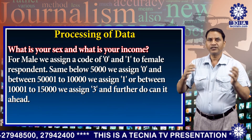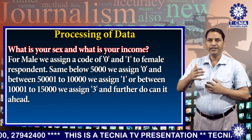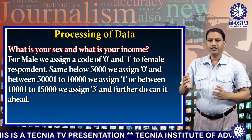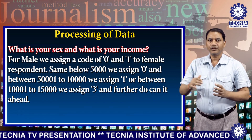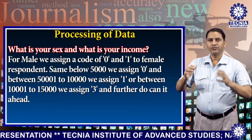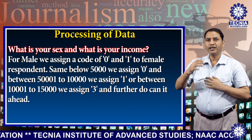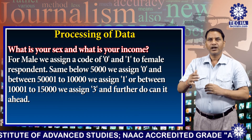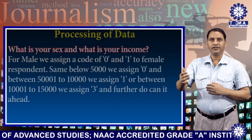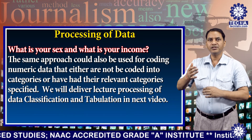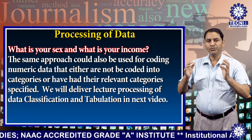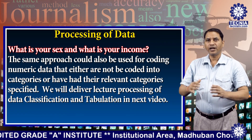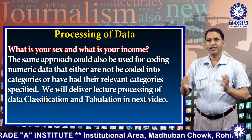What is your sex and what is your income? For male, we assign a code of 0 and 1 to female respondents. For below 5000, we assign 0; between 5000 to 10000, we assign 1; between 10000 to 15000, we assign 3, and so on. The same approach could also be used for coding numeric data that may or may not be coded into categories or have had their relevant categories specified.